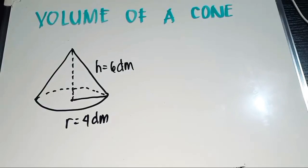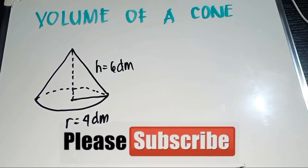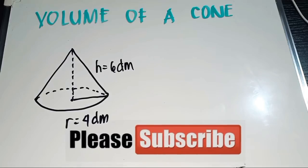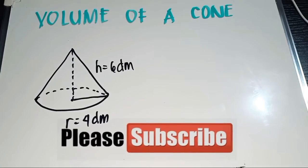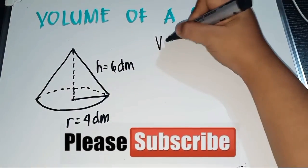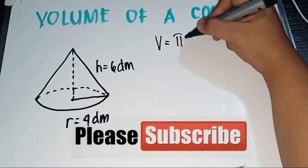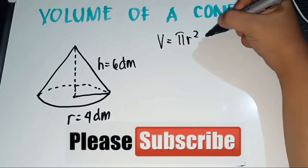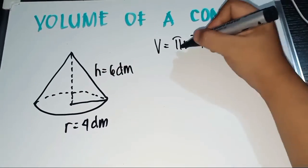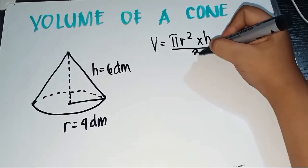How do we get the volume of a cone? In getting the volume of a cone, we use the formula: volume is equal to pi r squared times the height, all over 3.